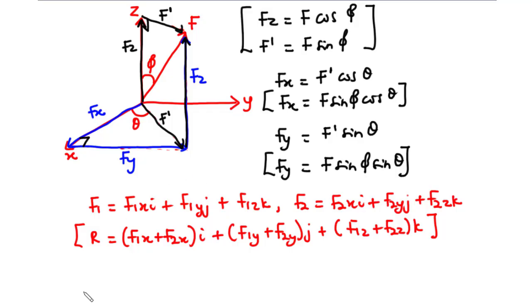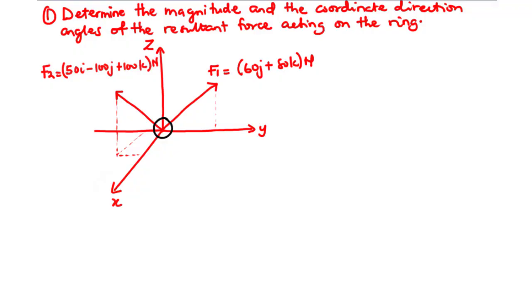Now let's take an example: determine the magnitude and coordinate direction angles of the resultant force acting on the ring. We have two forces acting on the ring. F1 equals 60j plus 80k — it has no x-component, only a y-component and a z-component. F2 equals 50i minus 100j plus 100k, so it has an x-component, a y-component, and a z-component.